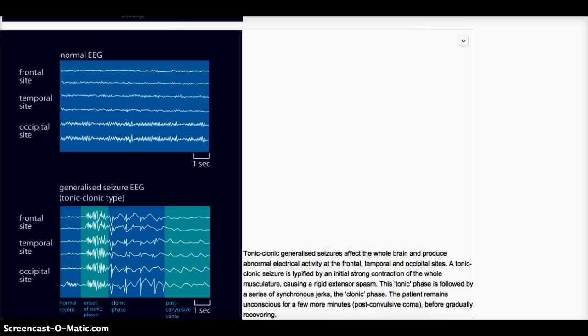Again, looking at tonic-clonic EEG, this is the normal EEG, and then there are spikes, very haphazard, and this is the setting of your tonic phase, which is basically the contraction of the muscle, and then there is the jerking phase, which is the clonic phase, and then the EEG tries to return to the normal, but not so in the post-convulsive coma.